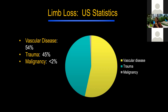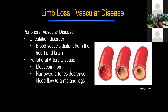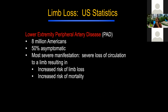Most of our patients on the functional limb service are vascular patients, with trauma coming in a close second. Peripheral artery disease is quite common, affecting blood flow to the arms and legs. It affects many Americans, with 50% being symptomatic. The most severe manifestation is limb loss and potentially risk of mortality.